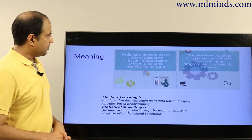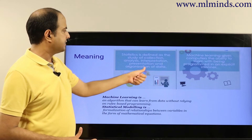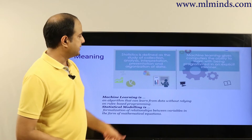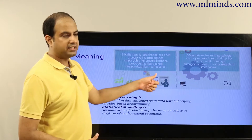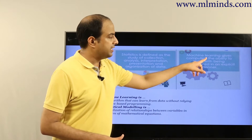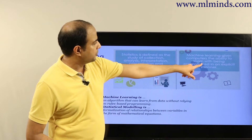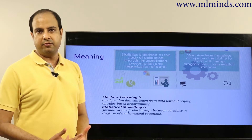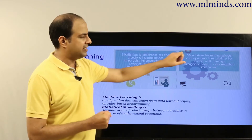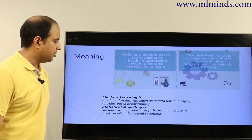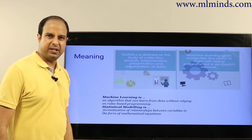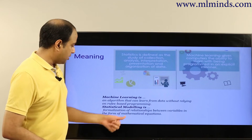Statistics is defined as the study of collection, analysis, interpretation, presentation, and organization of data. It's all about data — how can you collect data better, with less noise, how can you analyze and interpret it in various ways, and organize it better. Machine learning, on the other hand, is about making use of this data. It gives computers the ability to learn without being explicitly programmed, by learning patterns from the data. In some senses, statistics is about getting data, while machine learning is about learning from the data. A machine learning algorithm is any algorithm that can learn from data without relying on rules-based programming.